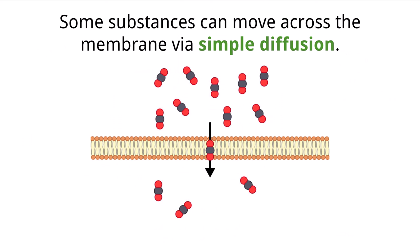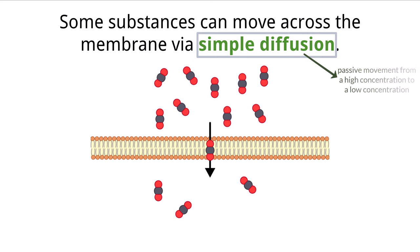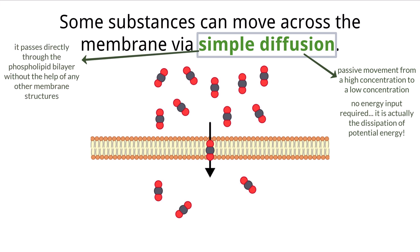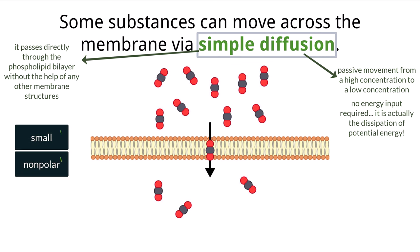Carrying on with the concept of permeability and substances moving through the cell membrane: when substances are able to successfully move through the membrane without any assistance from other structures — meaning they are literally moving between the phospholipids — without any energy input, we call this simple diffusion. Diffusion refers to the passive movement of particles from a high concentration to a low concentration, which occurs naturally without the input of energy. The term 'simple' refers to no other membrane structures being used in the process. Small, nonpolar substances are permeable to the cell membrane, meaning they are moving in or out via simple diffusion.